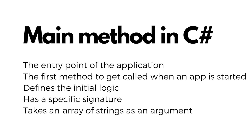When you run a C# application, the operating system looks for the main method in the executable file and executes it. The main method is where the program begins its execution and where you can define the initial logic.